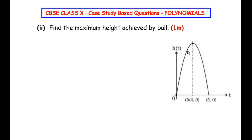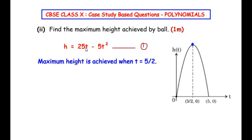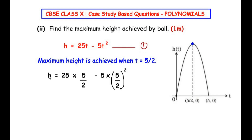The second sub question asks us to find the maximum height achieved by the ball. The highest point on the trajectory is where the ball starts to fall back down. The maximum height is reached when time t = 5/2, since the x-axis represents time. So at t = 5/2 or 2.5 seconds the maximum height was reached. Using the polynomial h = 25t - 5t², we substitute t = 5/2.